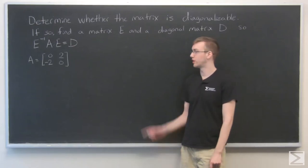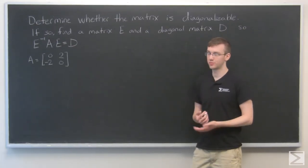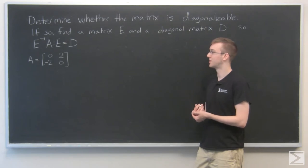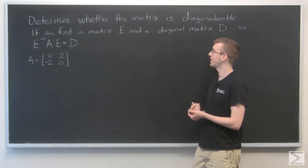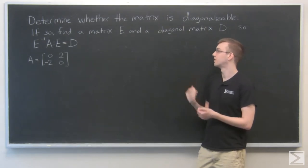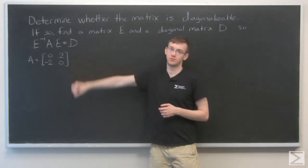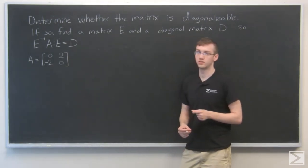For this problem, we need to determine whether this matrix is diagonalizable. It's a fun word. And if so, we find a matrix E and a diagonal matrix D such that we have this relationship: E inverse AE is equal to D.